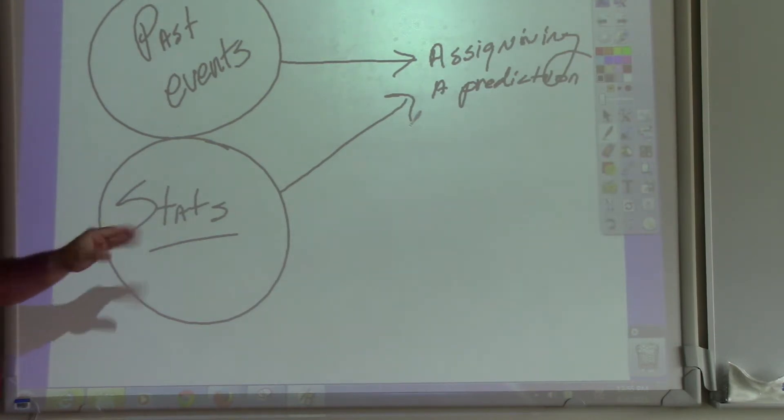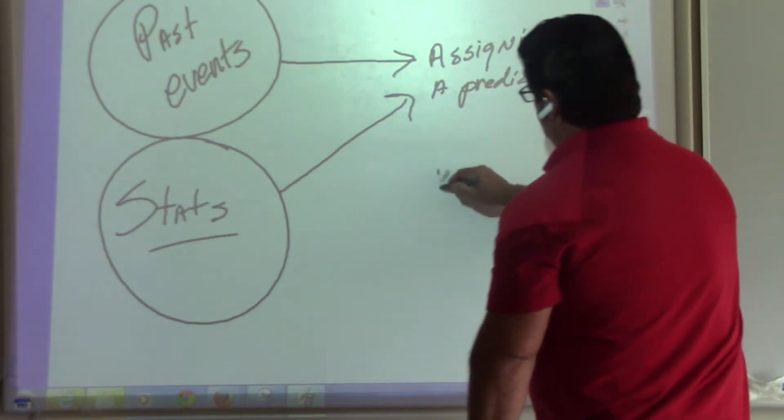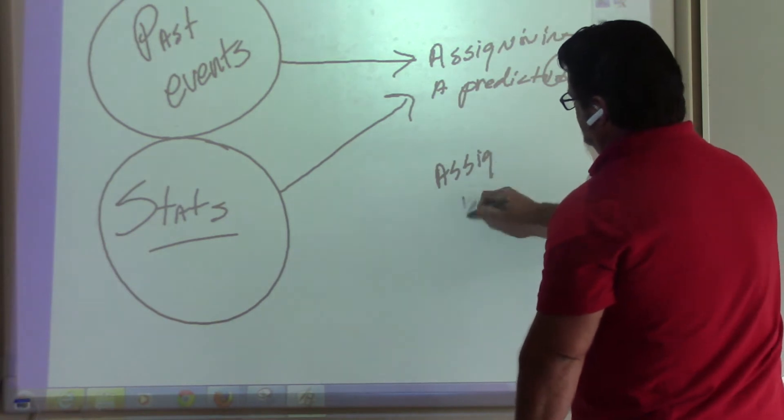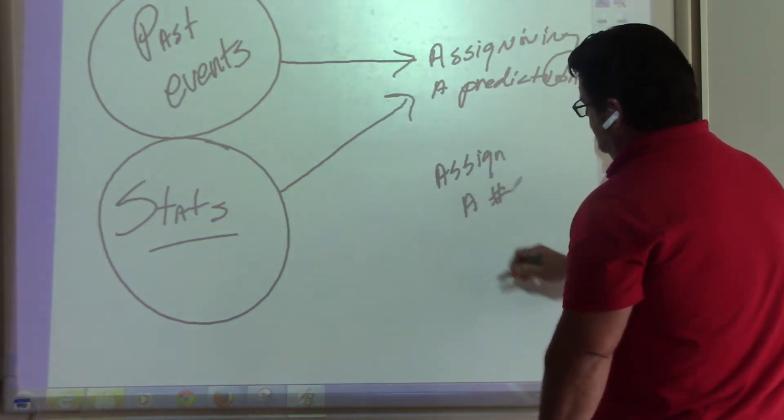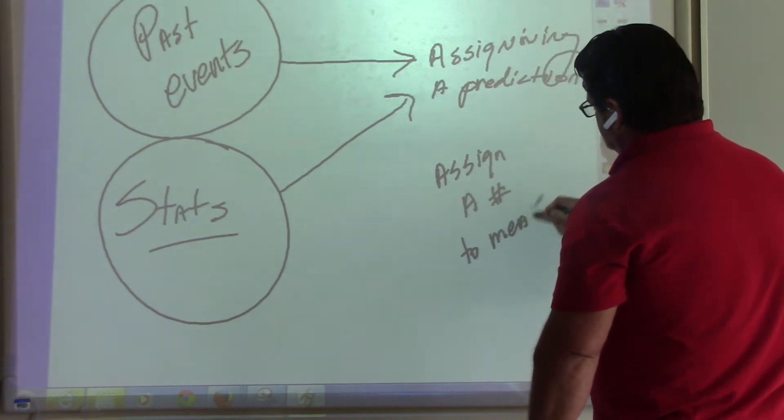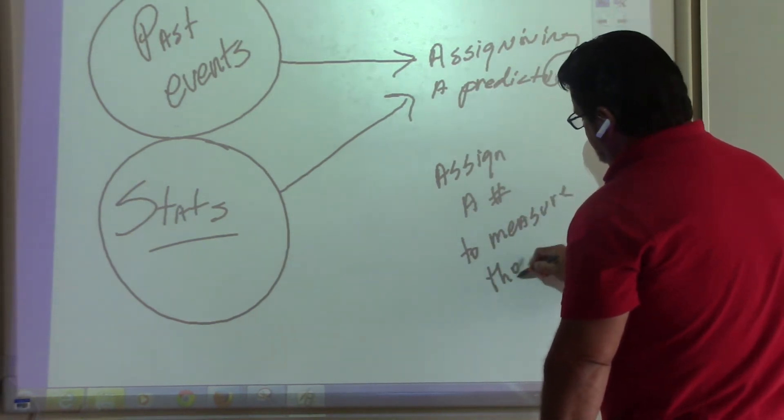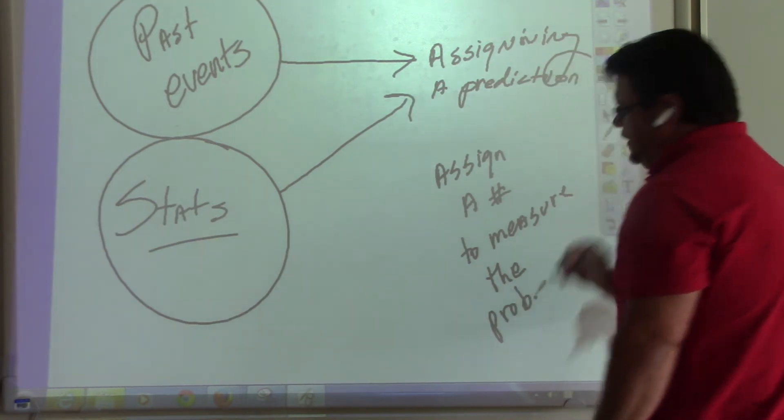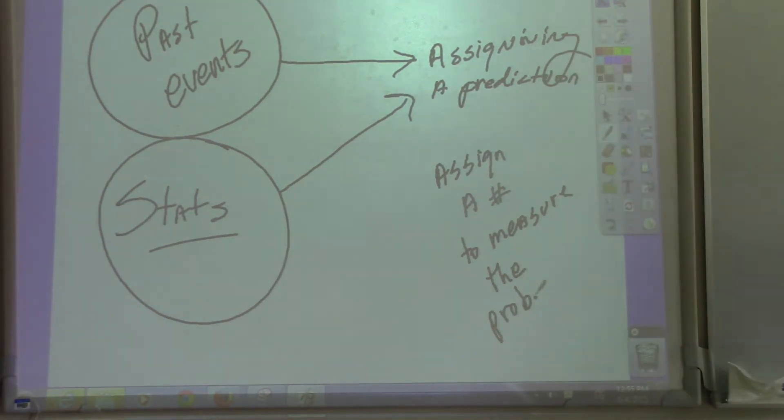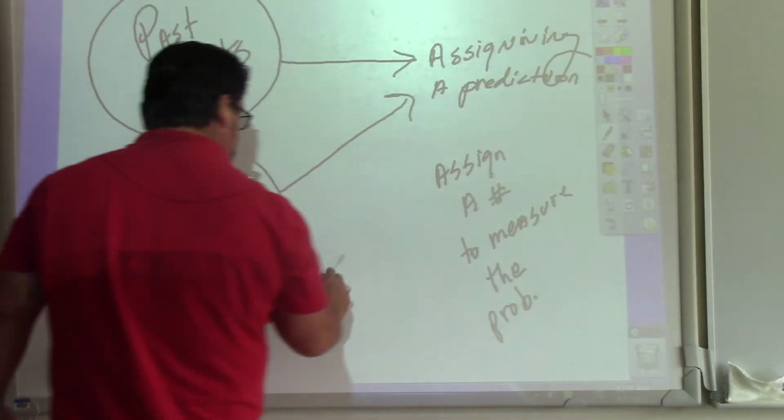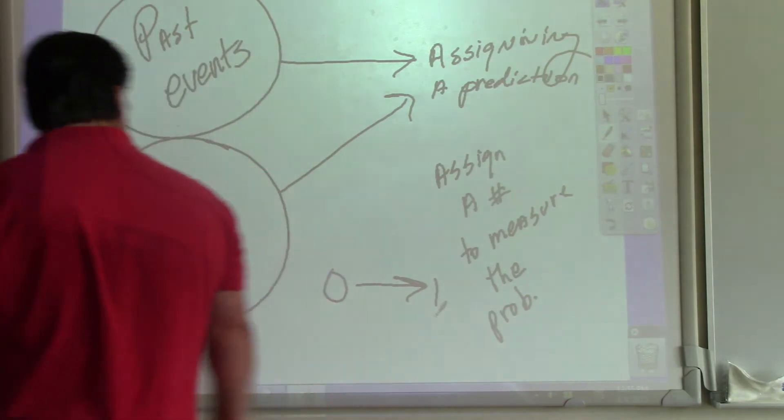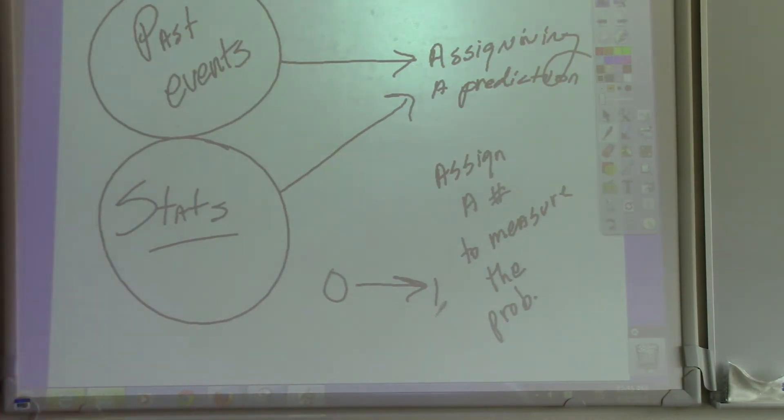But what can we do? We can take past events and statistics, and we can assign a number to measure the probability of something happening. And that number is between zero and one. Meaning it's going to be a decimal.